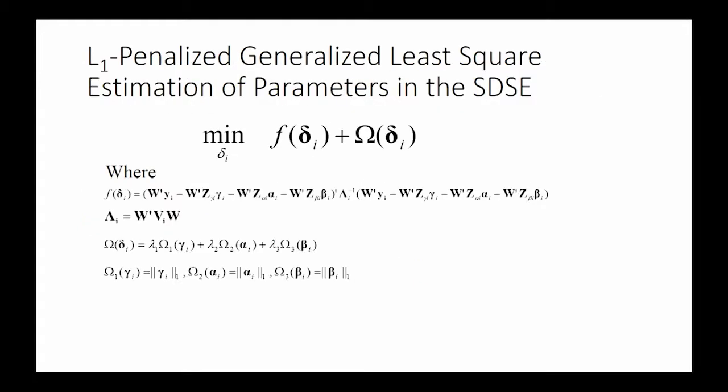For the sparse dynamic structure equation, here is the objective function. Because we want to control the complexity of the network, we also set some L1 penalty. Due to the L1 penalty, this problem cannot have analytical solution. So we use the proximal gradient method to solve the problem.